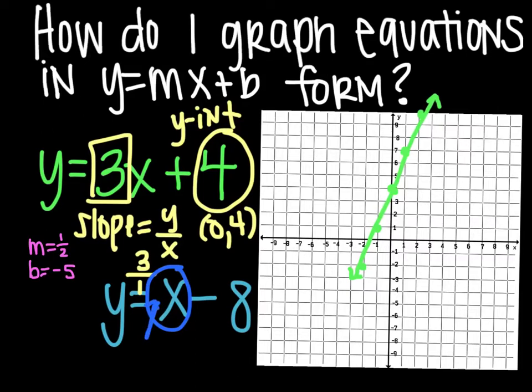Now notice there isn't anything there, but there really is. It's a 1. So your slope is just 1 over 1. And then your y-intercept is actually going to be negative 8. So your point is going to be 0, negative 8.